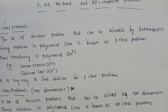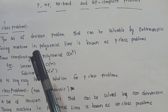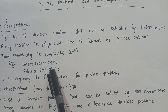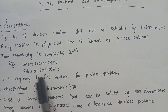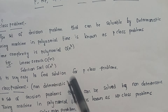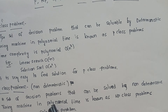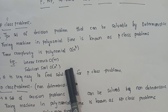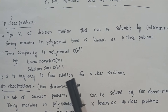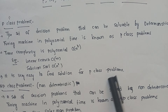In a deterministic way, polynomial time is used to solve P class problems. For example, linear search and selection sort — they are also P class problems. If we solve these problems step by step, we can solve them, and the time complexity is also less.